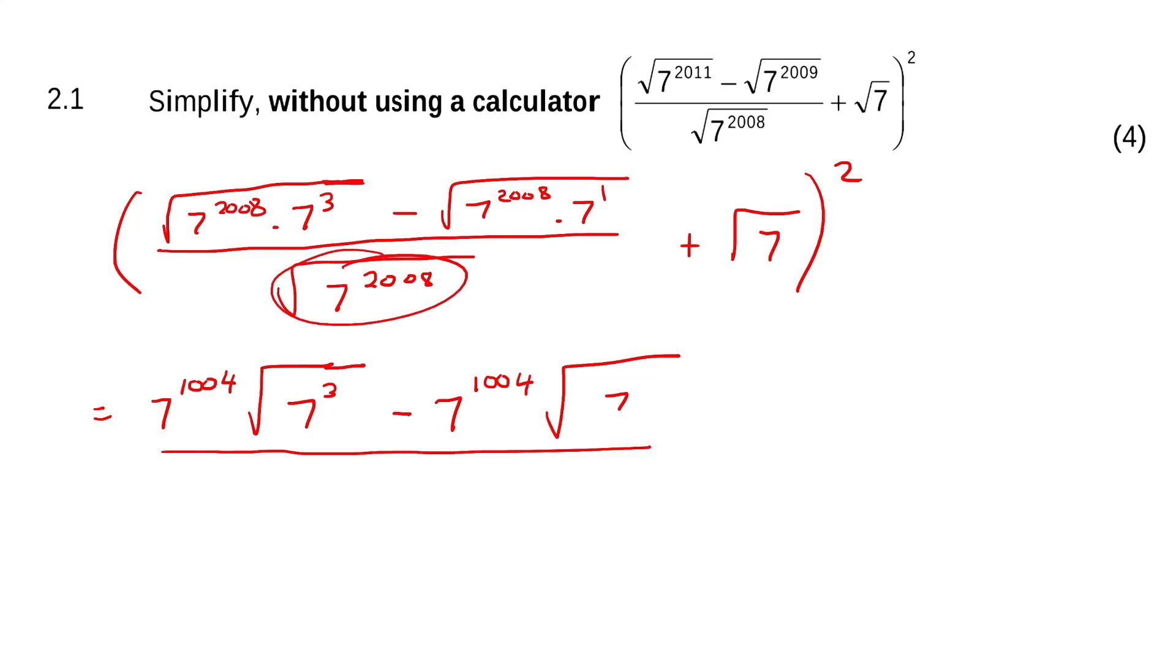And then this one is just going to become 7 to the 1004. Cool. Now things are going to cancel out by using the method I'm using now anyways, and then we can carry on after that if we need to and cancel out a little bit more. I'm just trying to cancel big parts for now. That's how I do maths.